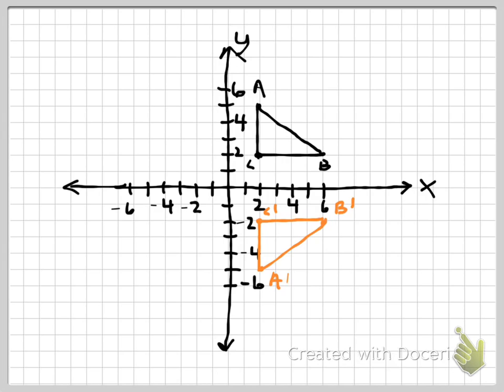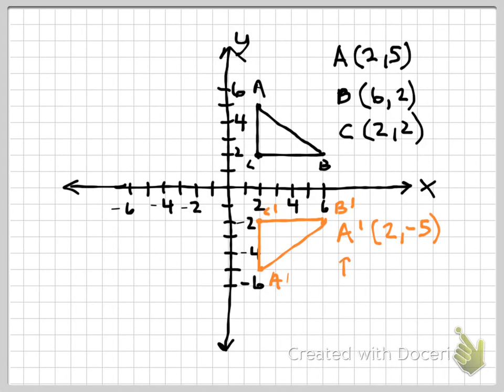So what I want to do is go back to our original, our pre-image, and label out the ordered pairs. So A was at two, five. B was at six, two, and C was at two, two. Now let's list the coordinates for A prime. It's located at two, negative five. B prime is at six, negative two. And C prime is at two, negative two.